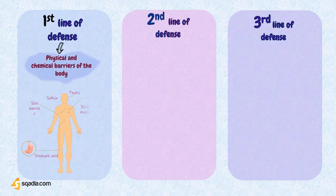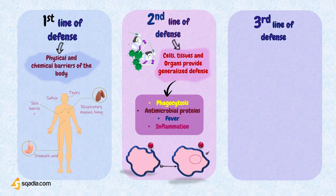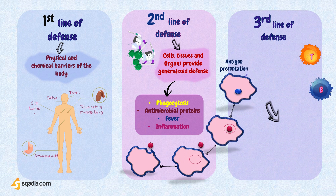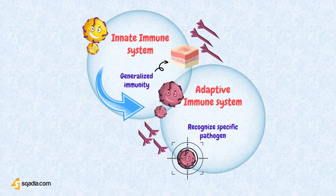We know about the two immune responses: the innate response that is present since birth, and the adaptive response which is acquired over time. The two responses do not work properly without the presence of the other, so there must be something that connects the two. As the cells of the adaptive and innate immune systems cannot function in isolation, immune cells use cytokines to communicate with each other and with different tissues in the body. The topic of our discussion today is this messenger molecule called cytokines.